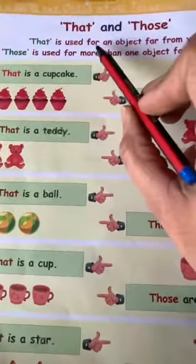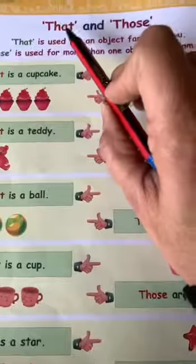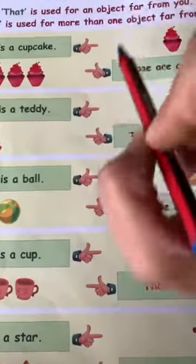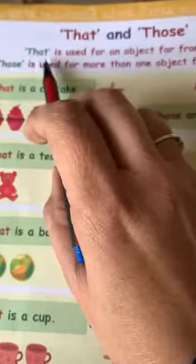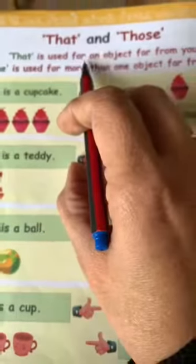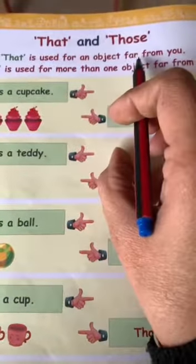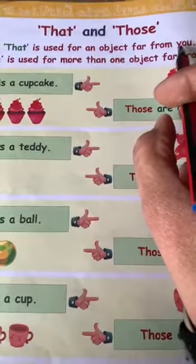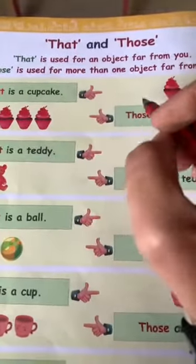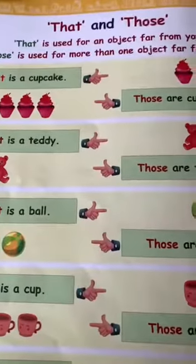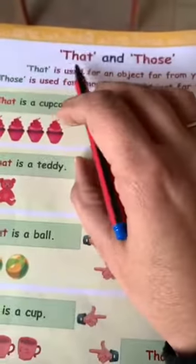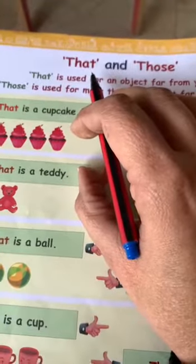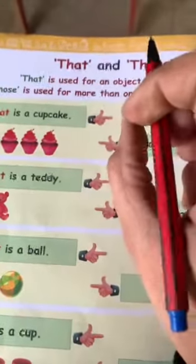Where we have to use that and those. That is used for an object far from you. Jo cheezayn hum se door hoti hain, we use that for that. What we use? We use that.